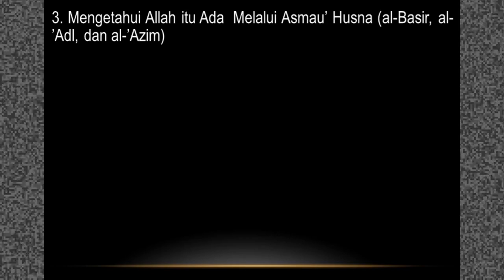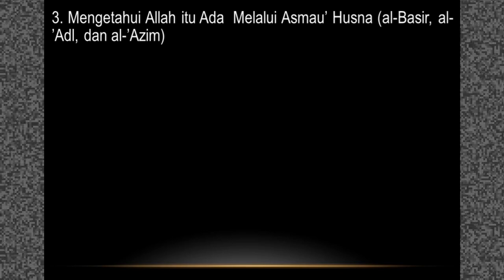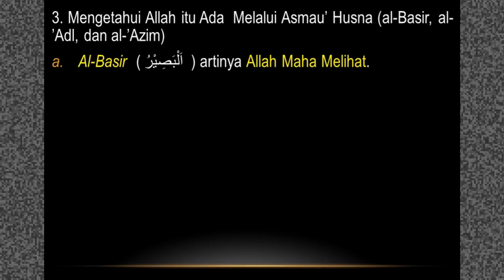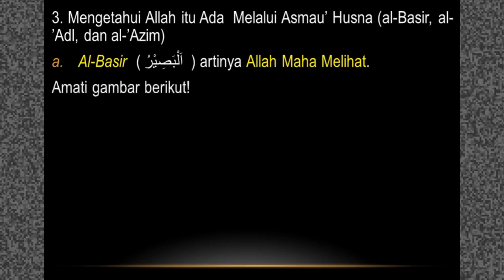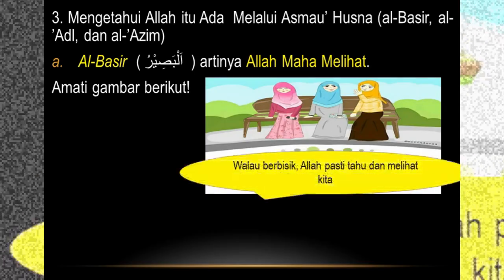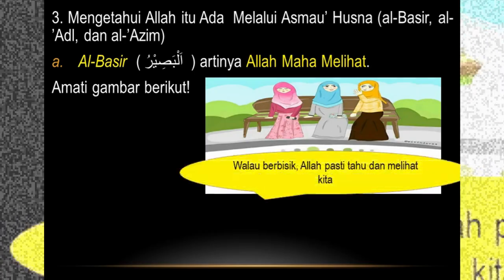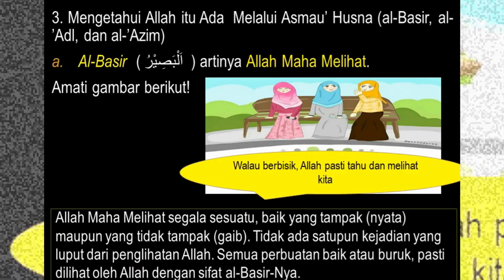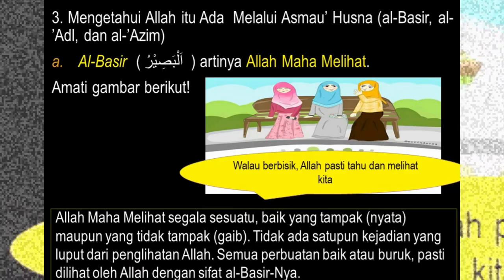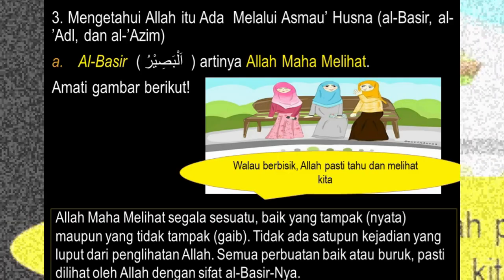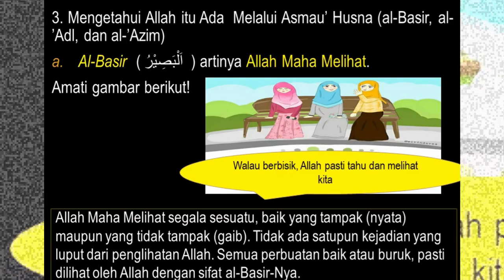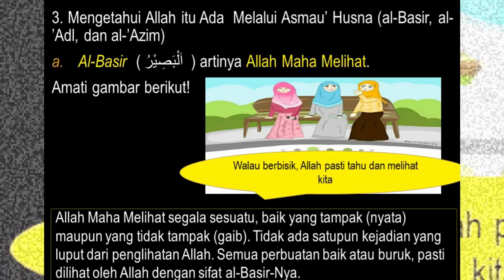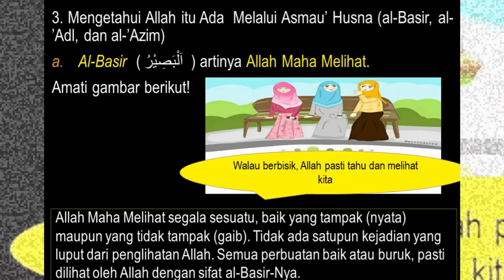Mengetahui Allah itu ada melalui asmaul husna: Al-Basir, Al-Adil, dan Al-Azim. Al-Basir artinya Allah Maha Melihat. Walau berbisik, Allah pasti tahu dan melihat kita. Allah Maha Melihat segala sesuatu, baik yang tampak nyata maupun yang tidak tampak atau gaib. Tidak ada satu pun kejadian yang luput dari penglihatan Allah. Semua perbuatan baik atau buruk pasti dilihat oleh Allah dengan sifat Al-Basir-nya.